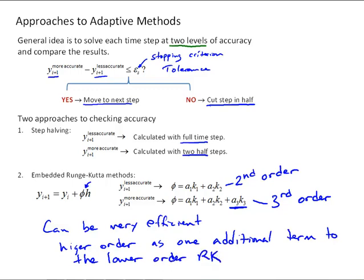And this makes the embedded Runge-Kutta methods preferred for adaptive time stepping because they are more efficient.